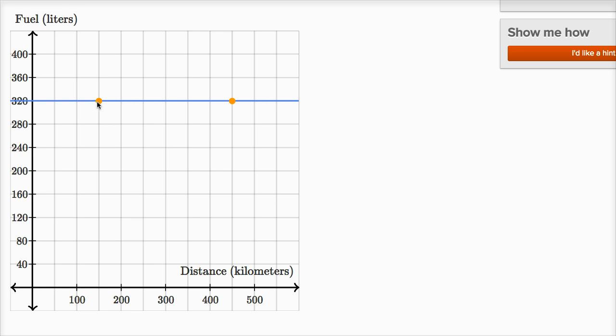We can define the line by moving these two points around, because two points define a line. So let's think about two points that we could figure out. Can we figure out the fuel at two different distances, and then that will help us define the line.